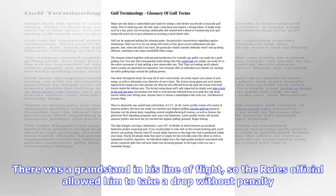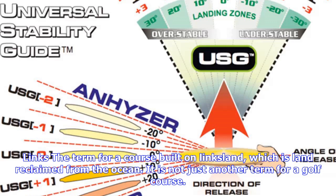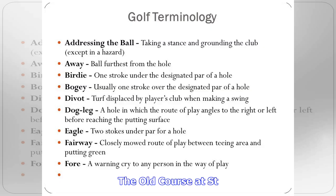Heel and toe weighted: a club design where weight is distributed towards the heel and toe of a club, usually an iron, to reduce the effect of mishits. When he played with heel and toe weighted irons, his scores improved.